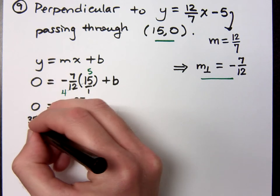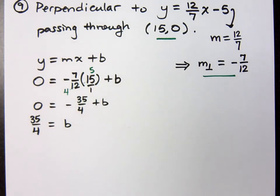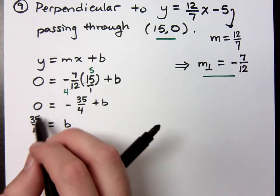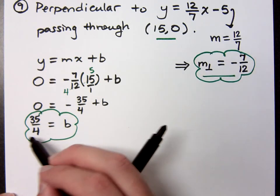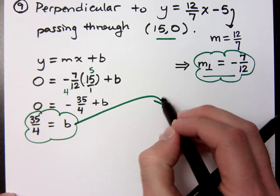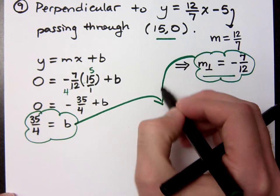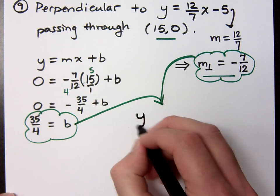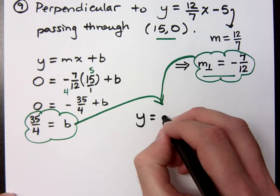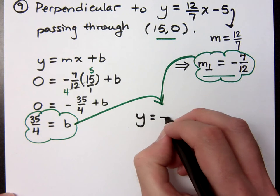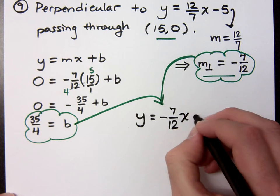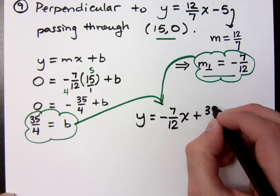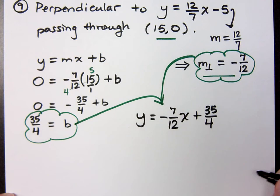Right, you move that over there and you add it to 0, it's just 35 over 4. All right, so there's my slope. I assume there's my y-intercept. So, what do we have here? That's negative 7 over 12 x. Oh, that's 35 over 4. Plus 35 over 4. What do you guys think?